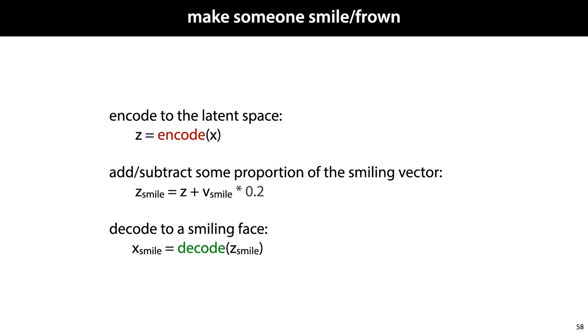Here's the algorithm written out. To make somebody smile or frown, we take their image x, we encode it into a latent vector. To that vector, we add or subtract some proportion of the smiling vector, giving us a new point in latent space, z smile, and we decode that point to give us x smile.